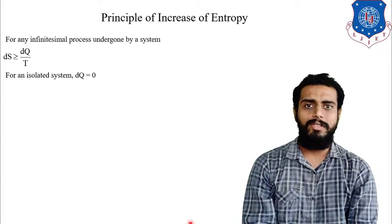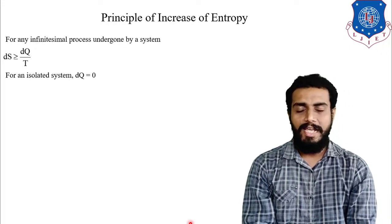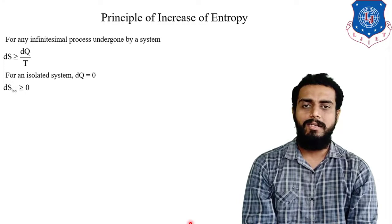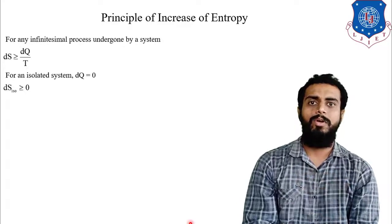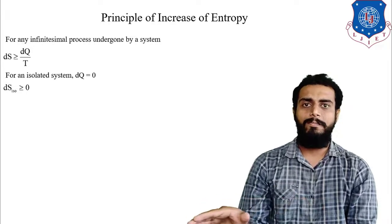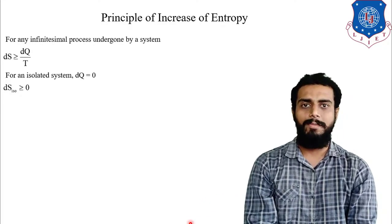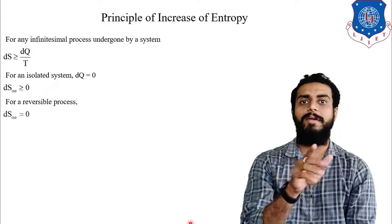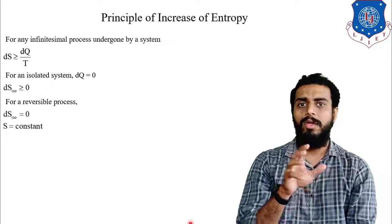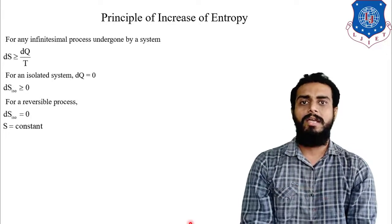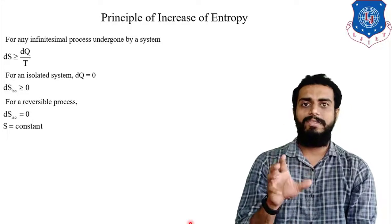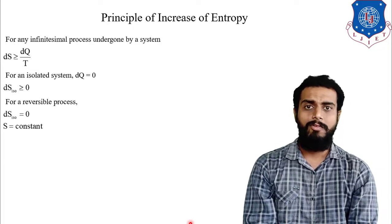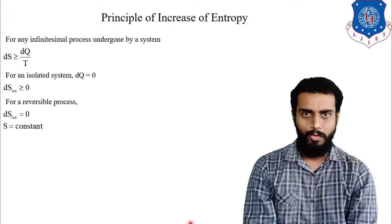If we substitute dQ = 0 into dS ≥ dQ/T, then dS ≥ 0. Now, if the equal sign holds — that is, dS = 0 — that means for a reversible isolated process the entropy will remain constant. So for a reversible process in an isolated system, the entropy change for that particular system will be zero.